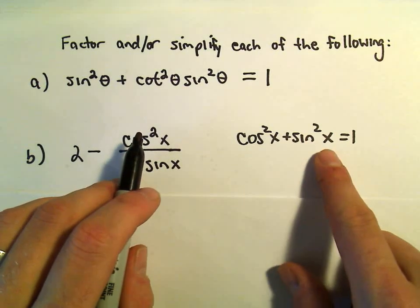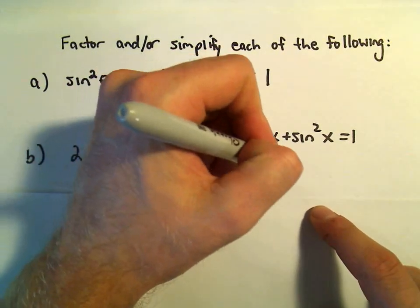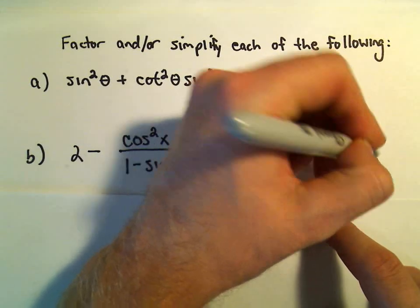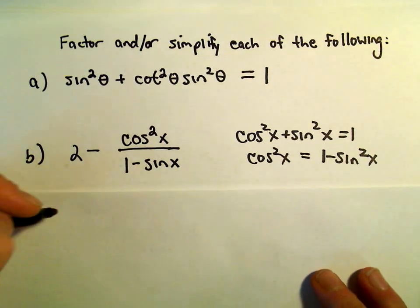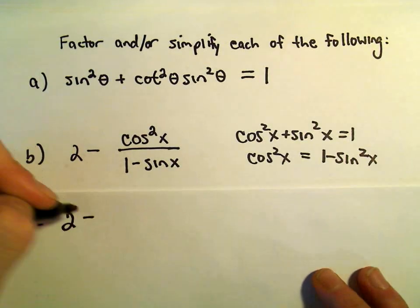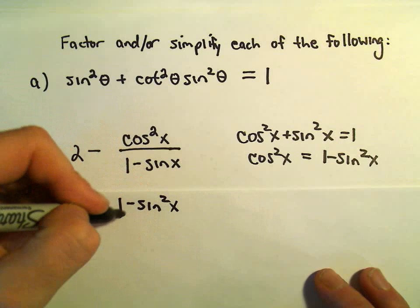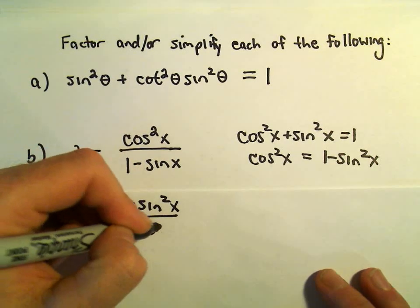So if we solve this for cosine squared, we'll get that cosine squared x equals 1 minus sine squared x. That's what I'm going to plug in the numerator. So we would have 2 minus, well, 1 minus sine squared x over 1 minus sine x.